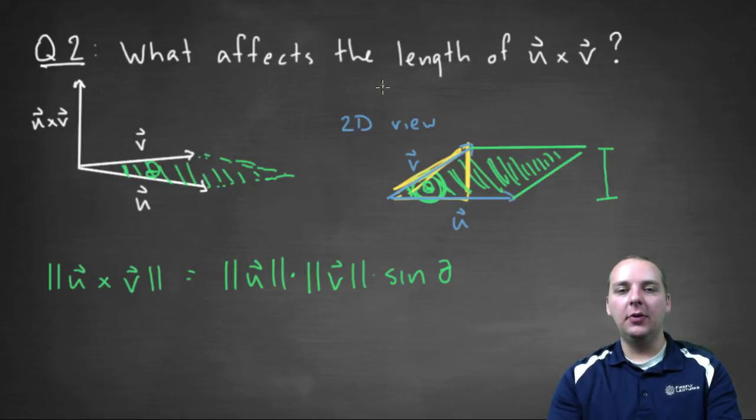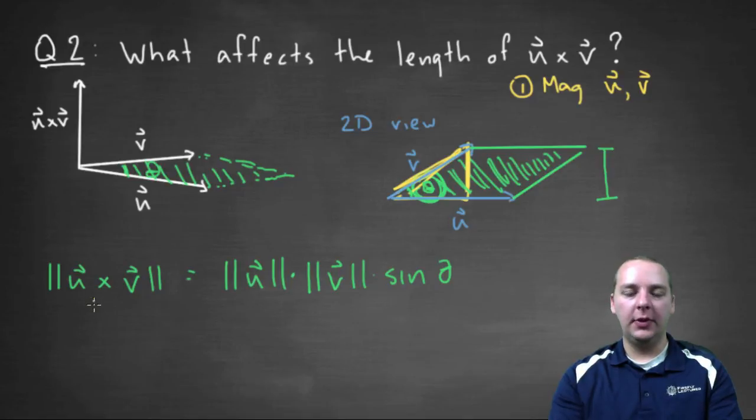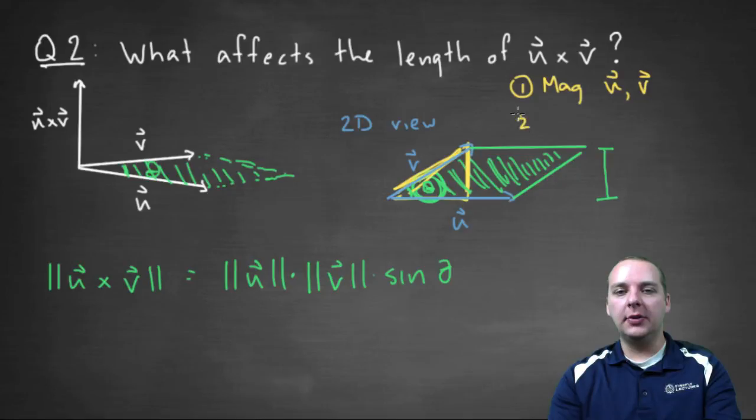So what affects the length of u and v? Well number one, the magnitude of u and v. Both of these affect the length of the cross product. The longer these are, the bigger the length of the cross product. And also number two, the angle that's made between them.